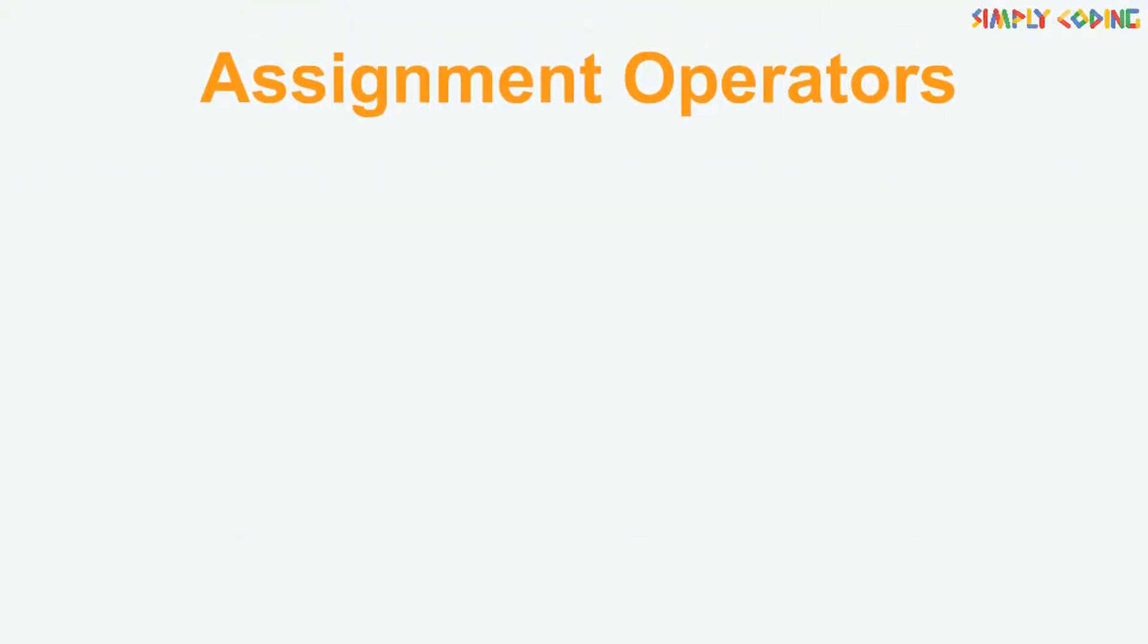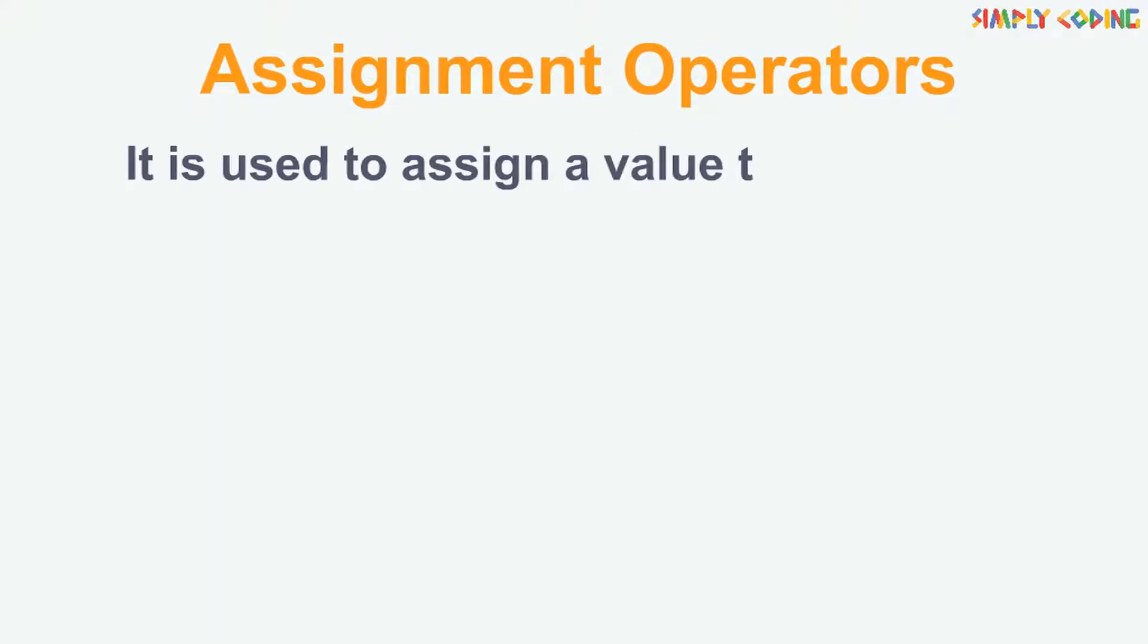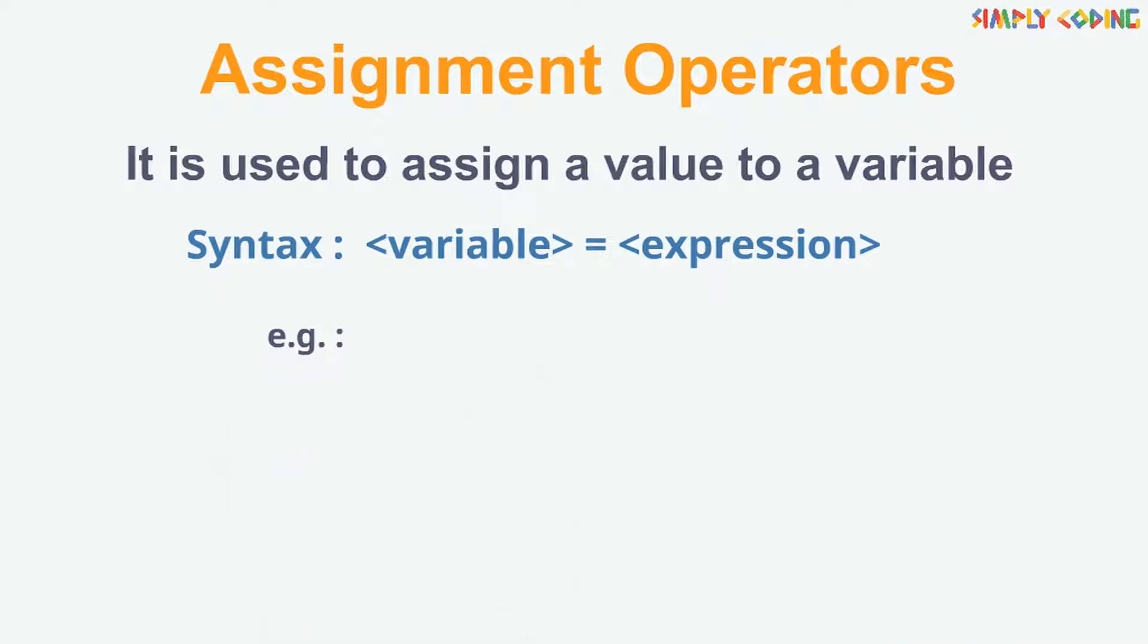First is assignment operator or equal to. It is used to assign a value to a variable. The syntax is as shown. For example, we give a data type with variable name and then assign a value directly or assign variable to another variable.